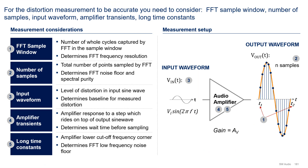For the distortion measurement to be accurate in simulation, you need to consider five things: FFT sample window, the number of samples, the input waveform, amplifier transients, and long time constants.